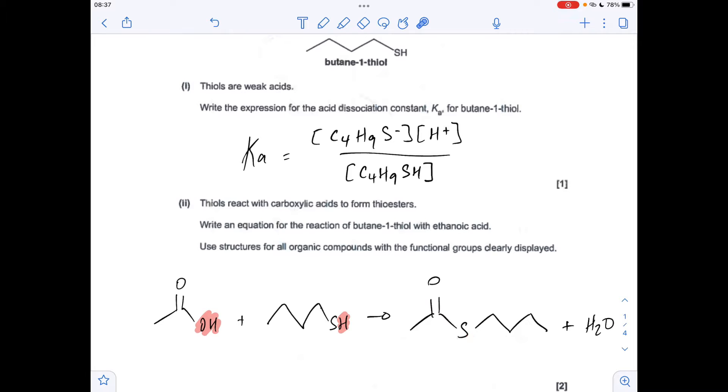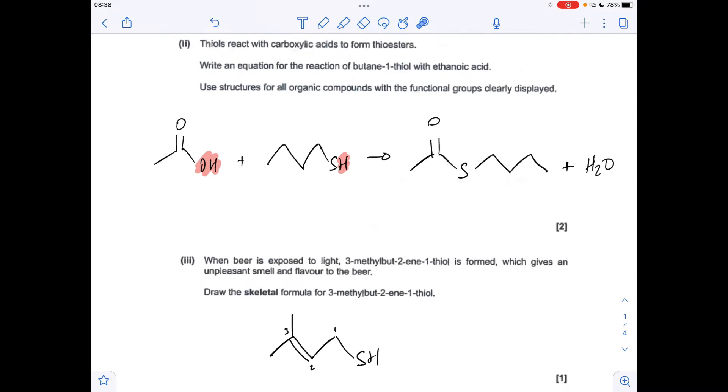Part three, the skeletal formula for 3-methylbut-1-ene-1-thiol. So obviously carbon one is the one with the thiol group, which makes that carbon number two. So there's your butene double bond starting at two going to three, methyl group on three.